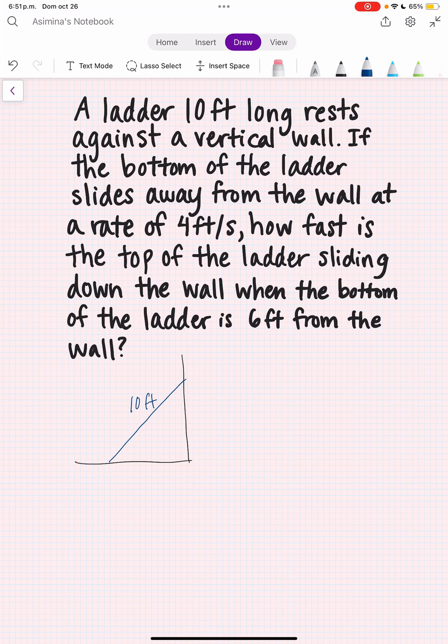Now let's label the length from the bottom of the ladder to the wall to be x, and the length from the top of the ladder to the ground to be y. Now what do we notice? We have that x squared plus y squared equals 10 squared, which is 100.